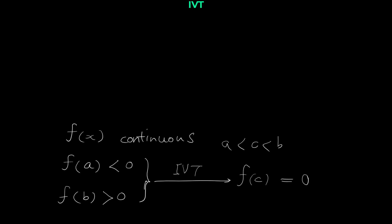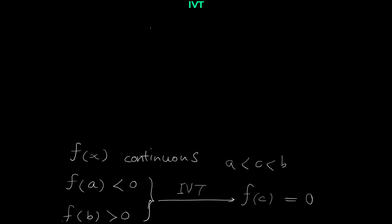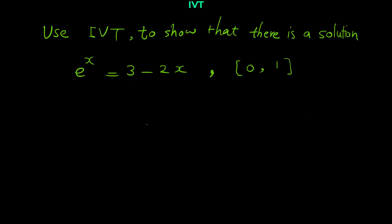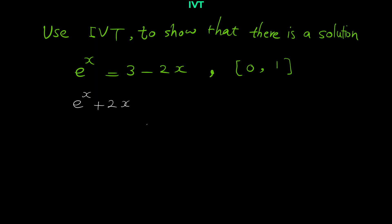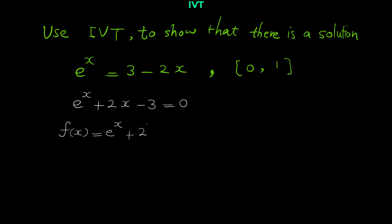Now that we've reviewed IVT, let's try this question. We are given an equation, and the first thing to do is move all terms to one side and name it f(x). So we move 3 minus 2x to the left: negative 2x becomes positive 2x, and 3 becomes negative 3, giving us zero. We define f(x) as e to the x plus 2x minus 3.